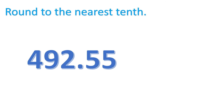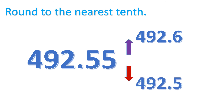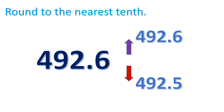Another example: 492 and 55 hundredths. We will round this to the nearest tenth — so it's either it will go up to 492.6 or retain to 492.5. Since the digit at the right side of the tenths place is 5, then we are going to round up to 492.6.